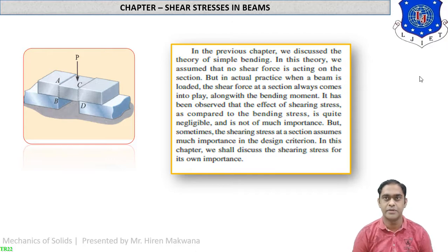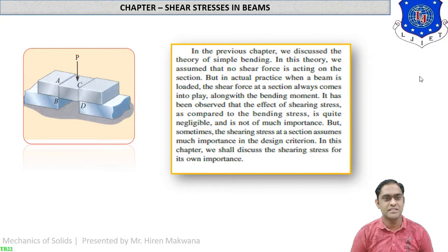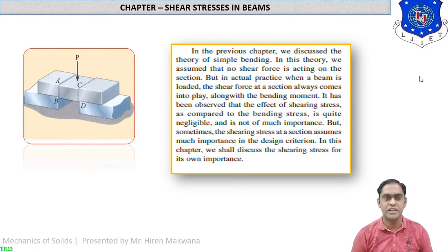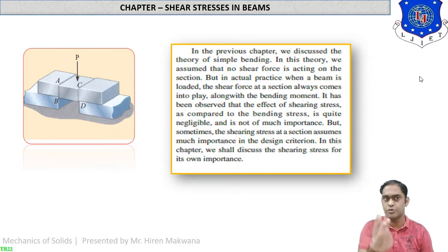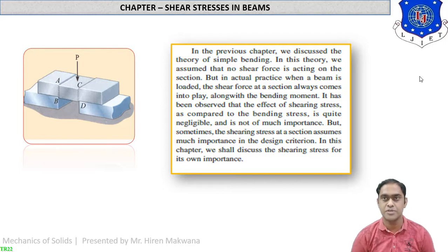Shearing means to cut the beam in a vertical plane. You can see in the figure that there is a beam AC on two supports B and D, and one vertical force P is applicable on beam AC, which causes the shearing of portion C only. Because below portion C there is no support, portion C will shear out from the beam. This type of loads are known as shear force and shear stresses respectively.